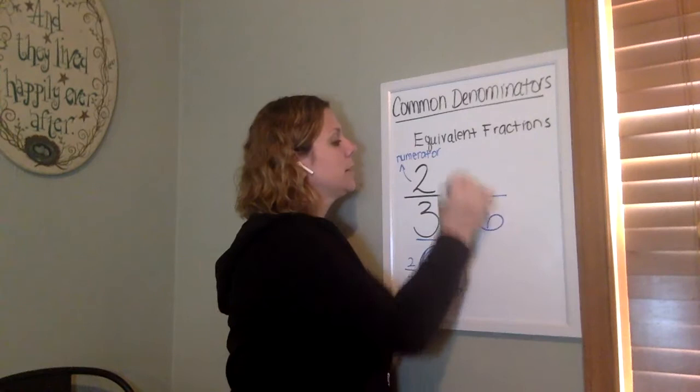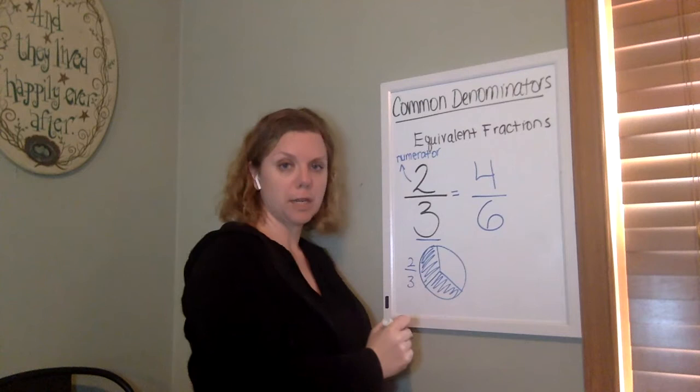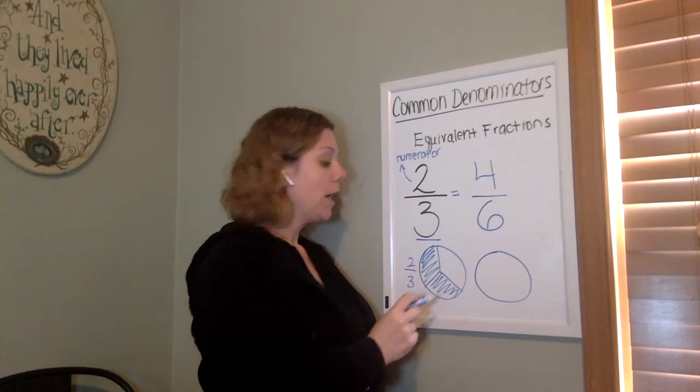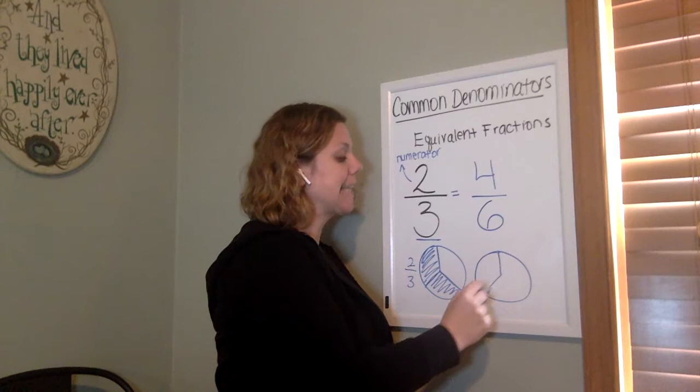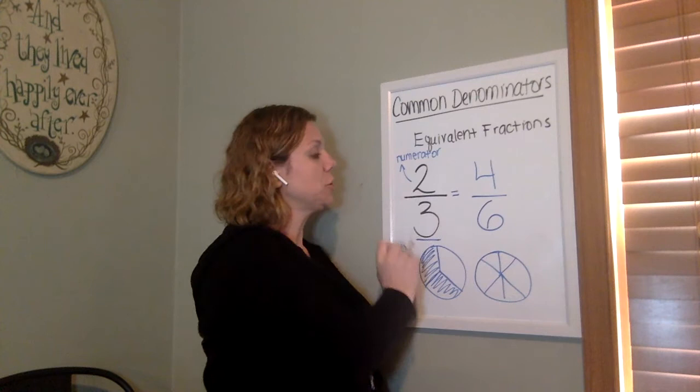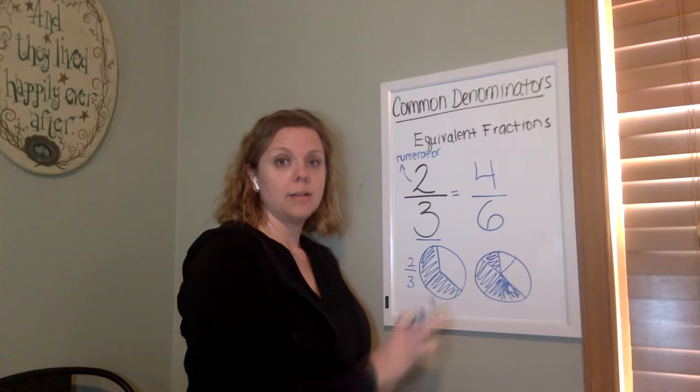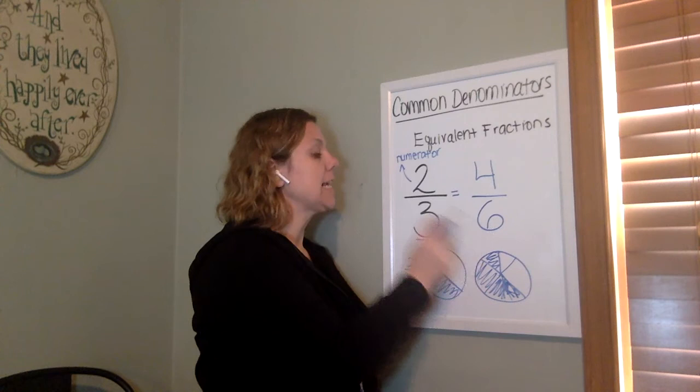Okay now if I'm going to tell you that this is an equivalent fraction that's the same amount. So say this is pizza cut into thirds and I'm telling you that that is the same amount of pizza as that. So now we have the same size pizza but instead of being cut into thirds it is being cut into sixths and instead of having two of them I have four of them. One, two, three, four.